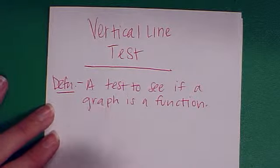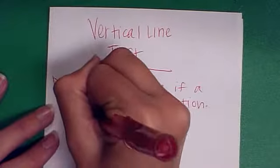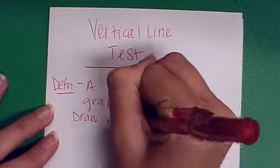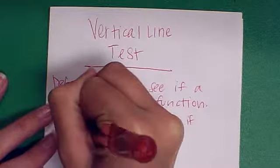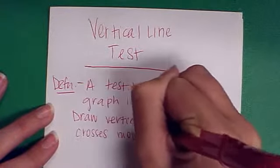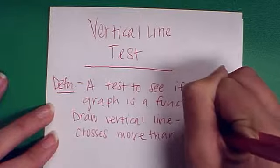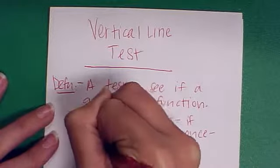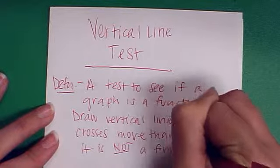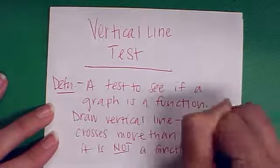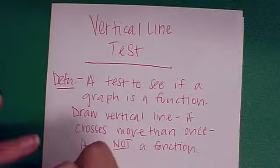To use the vertical line test, you're going to draw a vertical line, and if it crosses more than once, it is not a function. If it only crosses one time, then of course it is a function. Let's look at some examples.